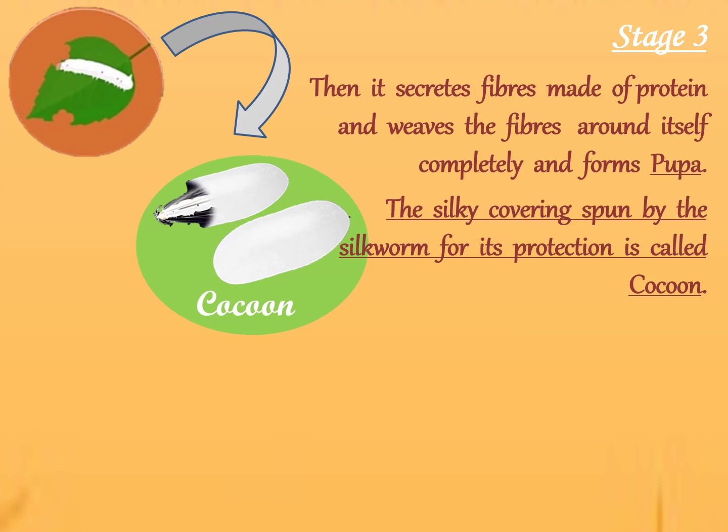Liquid silk is coated in sericin — S-E-R-I-C-I-N. Sericin is a water-soluble gum which can easily dissolve in hot water and solidifies on contact with the air, becoming silk fibre.